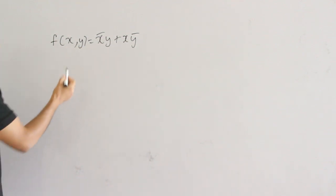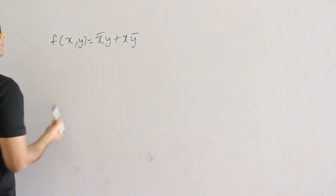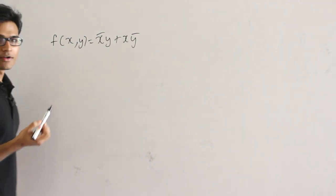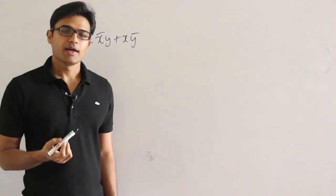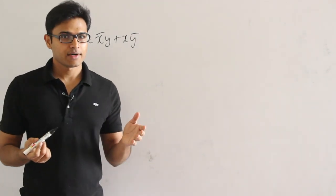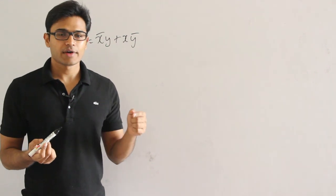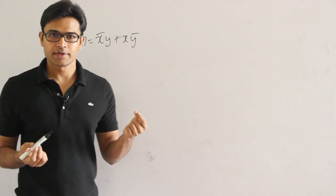If any function has to be functionally complete, it should be able to derive first: complement, and then AND or OR.